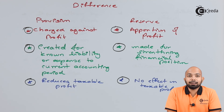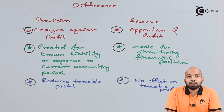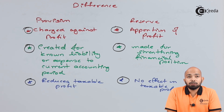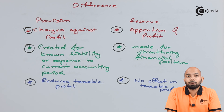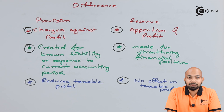Provision should be created only if you have a known liability or known expense that might come up at any point. For any contingency you are merely thinking about, you need not create a provision — let that thing happen or come closer before a company opens a provision for it. Reserve has no effect on taxable profit, so there is no change required when taxing the profit and loss account.